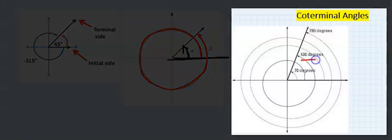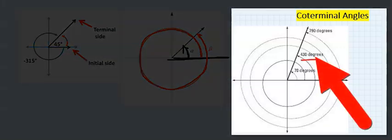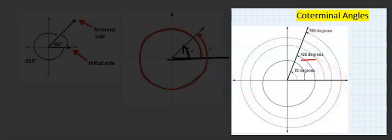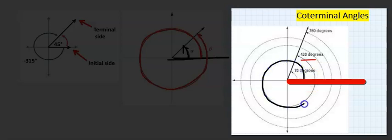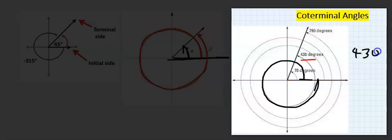For example, consider 430 degrees — it is greater than 360. So I will start my movement from here and go this way round the circle, 360.